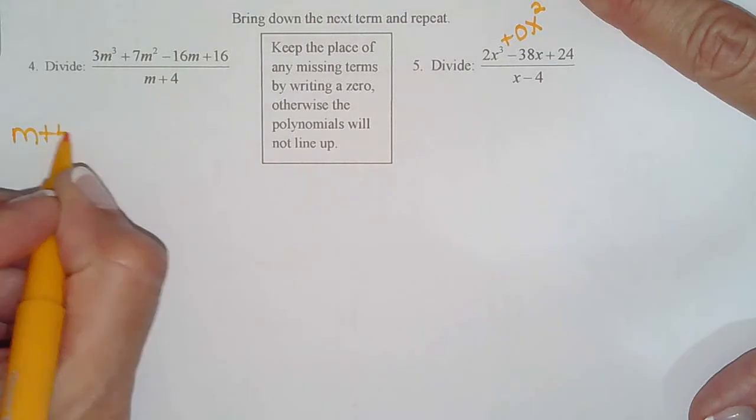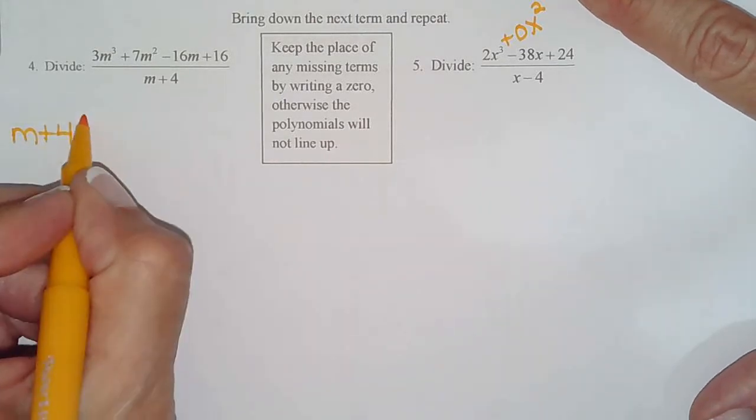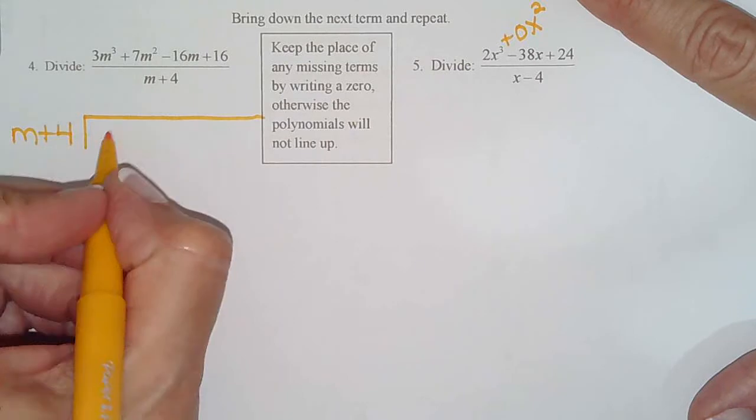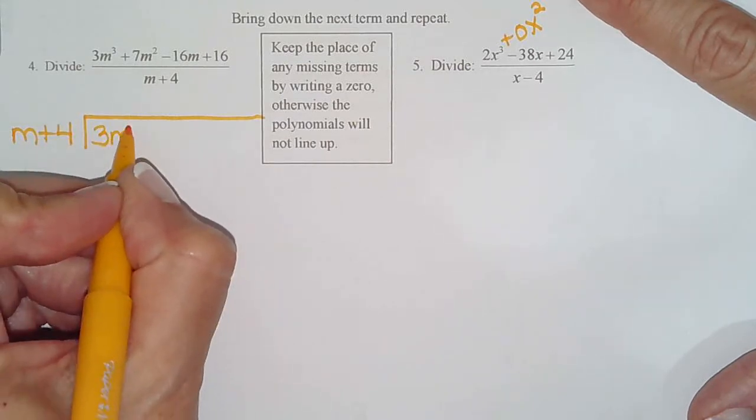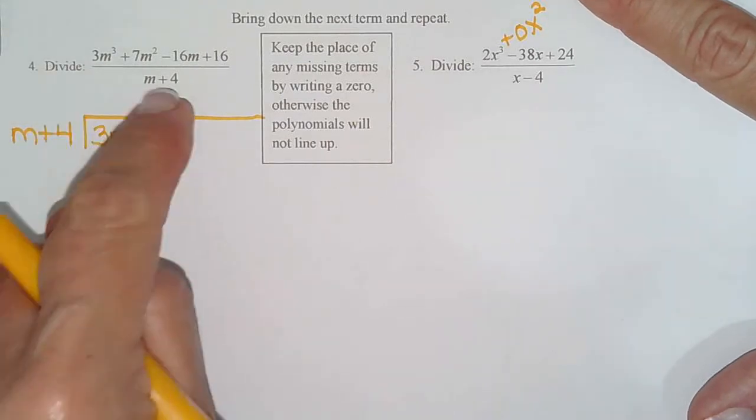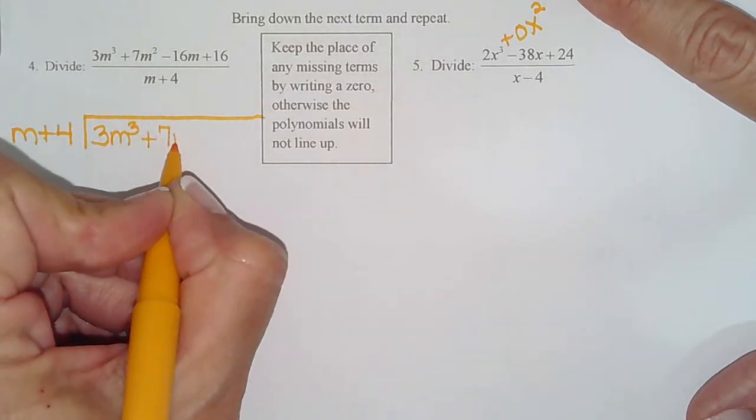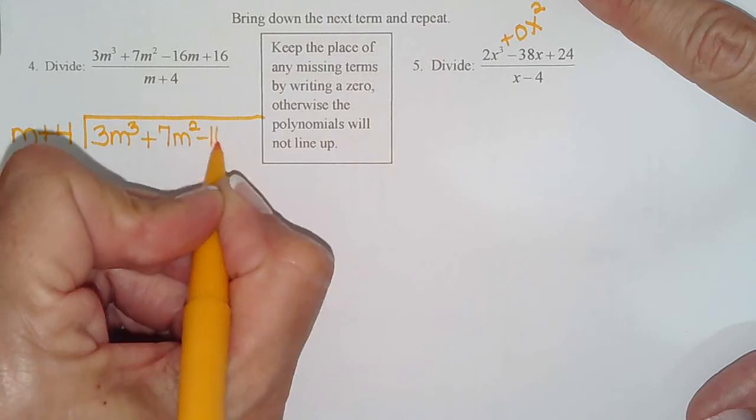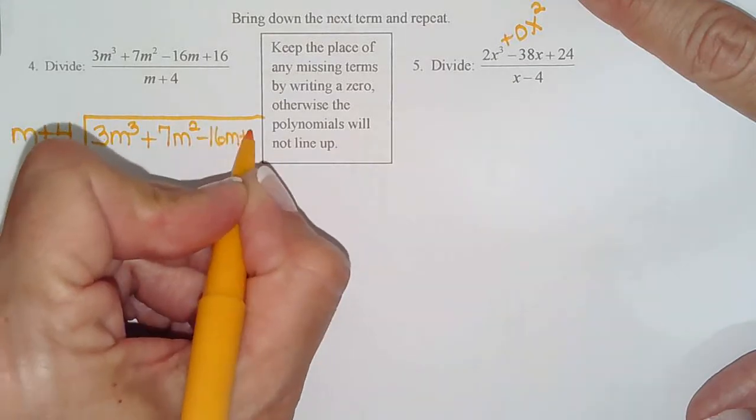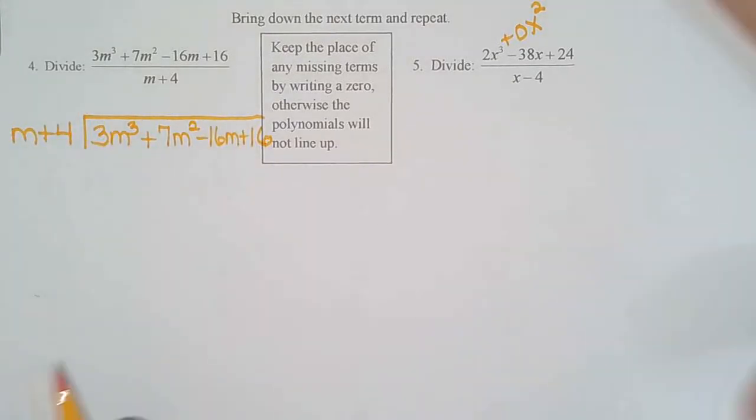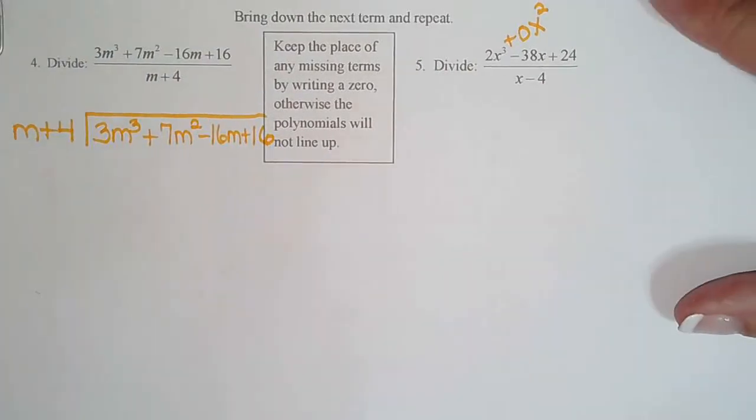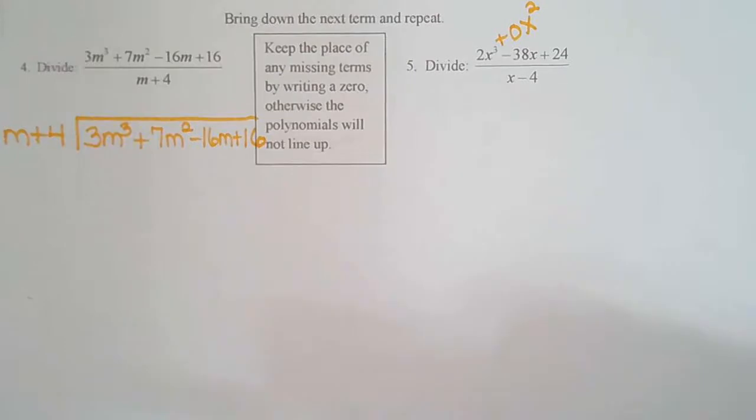So first we write the divisor outside. And we already looked and we saw that there weren't any missing terms. So just carry those down. So whatever's in the denominator always becomes the divisor, what goes outside. So 3m cubed plus 7m squared minus 16m plus 16. I'm going to pause the video of my neighbors here for their dog. One second. Sorry about that. Dog sitting.